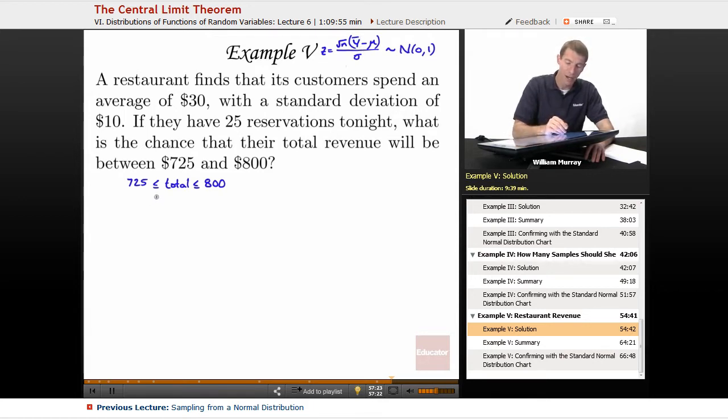We just divide by the customers, the number of customers, and convert that into an average amount that each customer would spend. So the mean, the average, Y bar would have to be between $725 divided by how many customers were there, $25 and $800 over $25. Because that's how much the average customer would have to spend in order to get the total between $725 and $800.